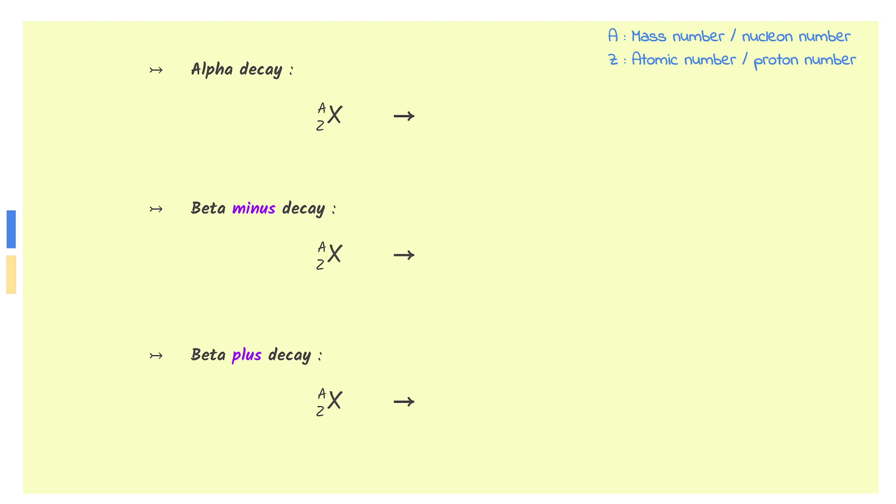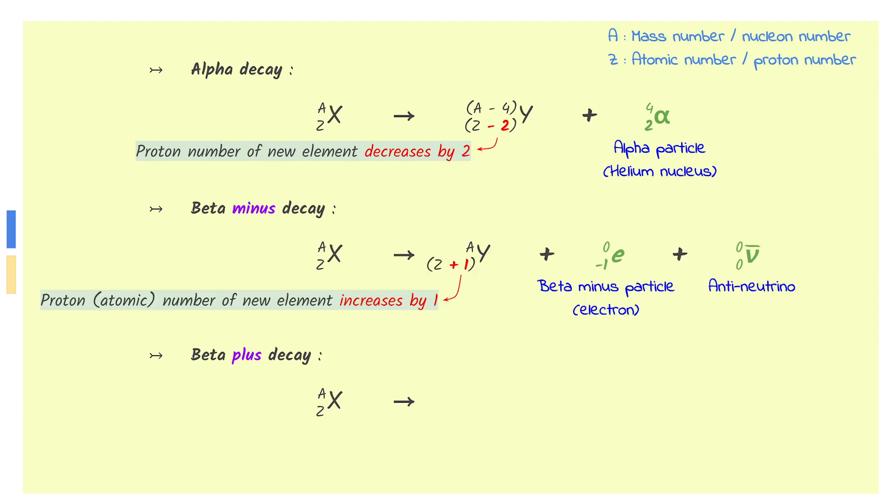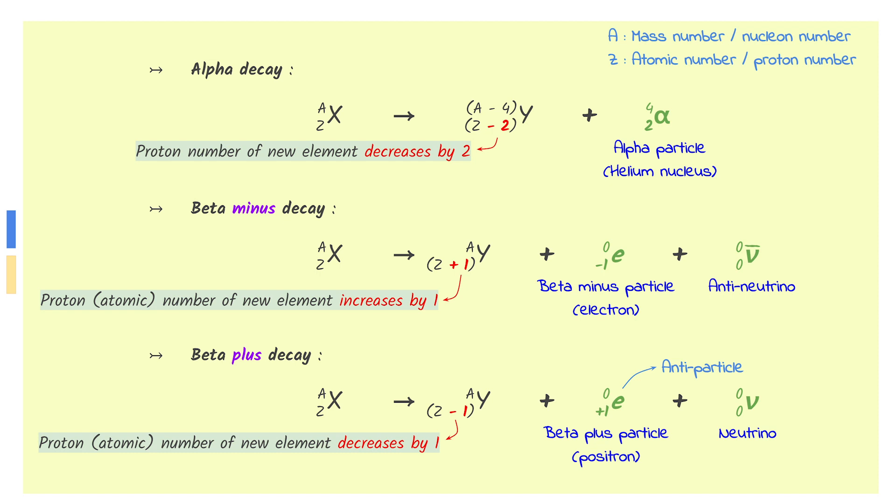Let's remind ourselves of alpha decay and beta decay, paying attention to the change in the number of protons. Alpha decay is when an alpha particle is emitted from the nucleus of an unstable nuclei, resulting in the proton number decreasing by 2. Beta minus decay is when a beta minus particle and an anti-neutrino are emitted, increasing the proton number by 1. Beta plus decay is when a beta plus particle and a neutrino are emitted, decreasing the proton number by 1.